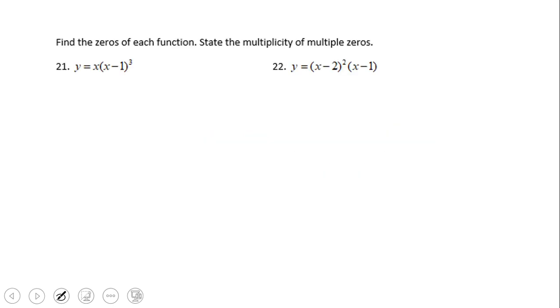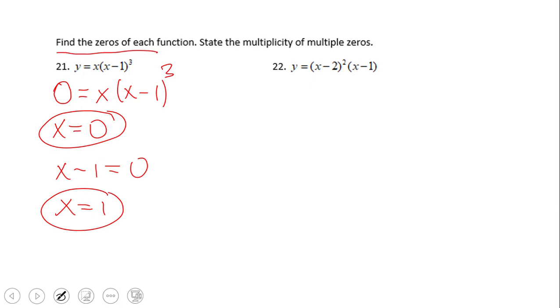In order to find the zeros of a function, we have to make that function zero. In this case I'll make y equals zero and we end up with a polynomial equation. This one is in factored form so we're going to use the zero product property, and we're going to have x equals zero as the first equation with solution x equals zero, and x minus one equals zero, which gives us x equals one. These are the zeros of this function.